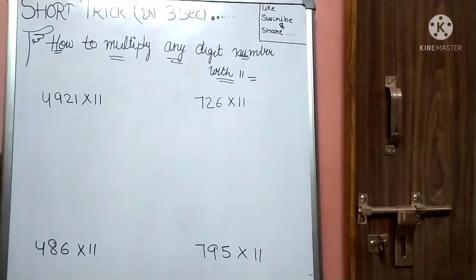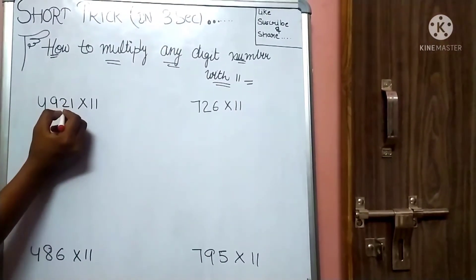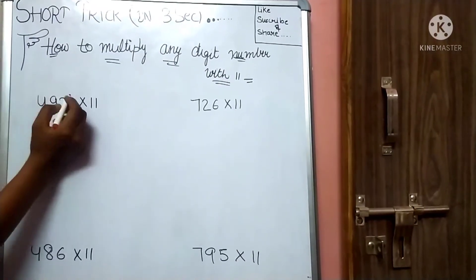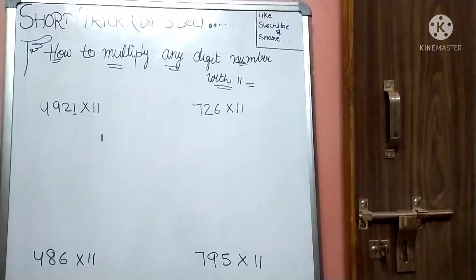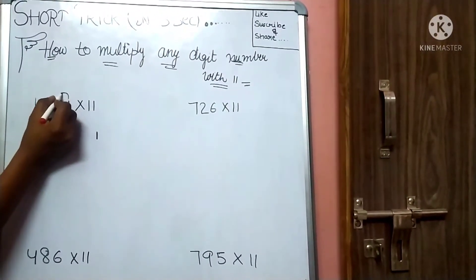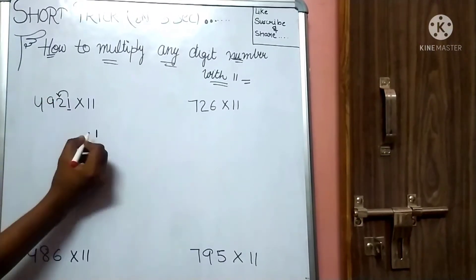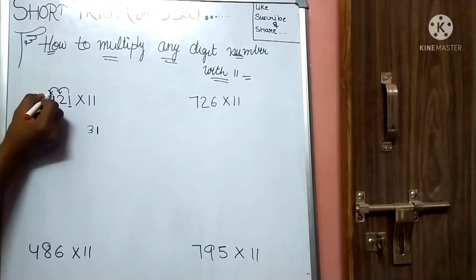The first step is to identify the place values. Once, tens, hundred, thousand. Keep the ones place as it is. After that, I will add. I will add ones and tens. Tens, I will add hundreds. How much will it be?